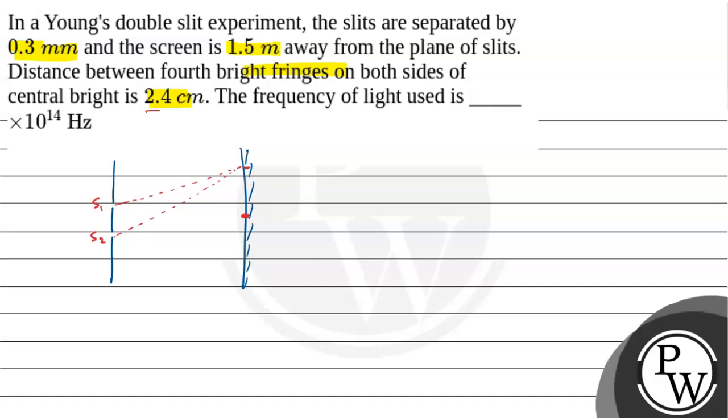Let us say yahan par hum ne 4th bright fringes observe kiya. So let us say this is the 4th bright fringes. So according to the question, the distance between the 4th bright fringes is 2.4 cm. Now, hume find karna padega ki the frequency of the light used.